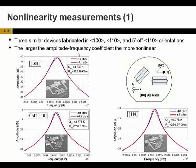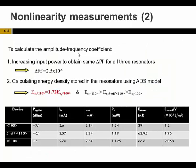As you can see in this picture, the normalized frequency shift for all three resonators is the same. We then measured the S-parameters of each resonator, imported them into ADS software, used it as a resonator model, and calculated the energy density stored in each resonator. This table shows different parameters such as input power, output current, power dissipated in the resonator, and the energy density stored in each resonator simulated by the ADS software. Our calculation shows that the energy density stored in the 1-1-0 resonator is 1.72 times larger than that stored in the 1-0-0 resonator.